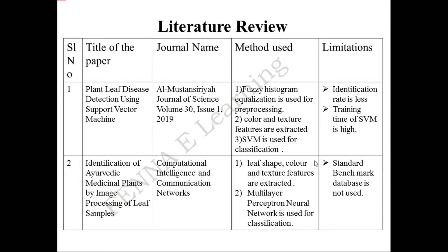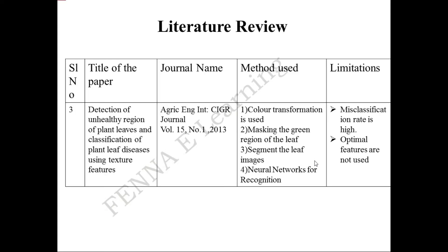In the second work, leaf shape, color, and texture features are extracted and classification is performed using a multi-layer perceptron neural network. The major limitation is that a standard benchmark database is not used to analyze the quality of the work. In the third literature paper, color transformations are used to mask the green region of the leaf, segmentation of leaf images is also performed, and a neural network is used for recognition. The major limitation of this work is that the misclassification rate is high and optimal features are not properly used.